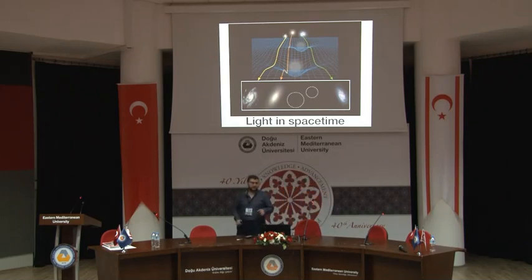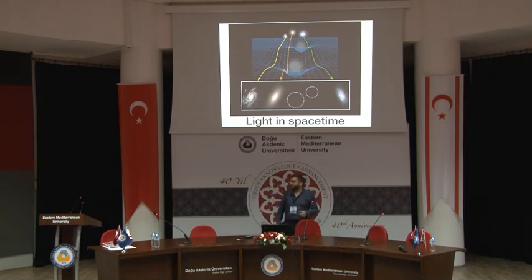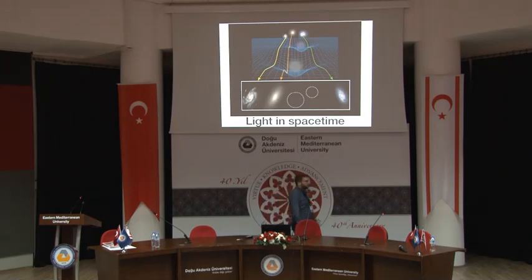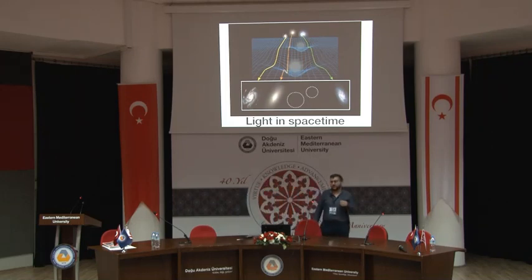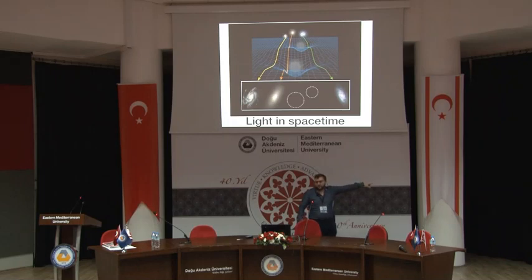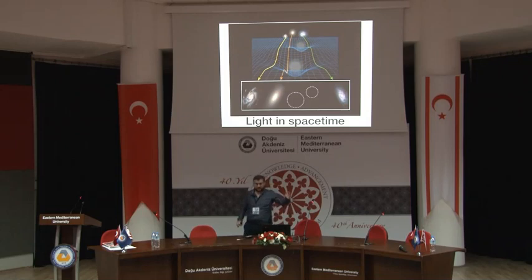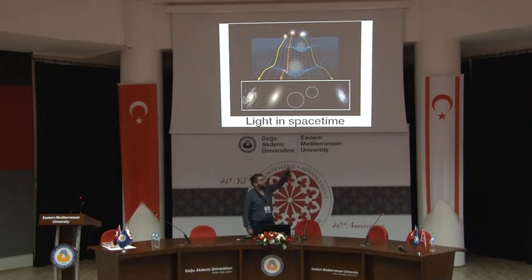On Earth, light always travels in a straight line. If you throw a ball at another ball, it goes straight and hits it — it is impossible to see beyond the ball. But if you use Einstein gravity and put a black hole instead of a ball, you can warp space-time and warp the path of light, so you can see behind the ball.